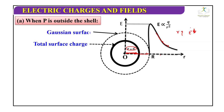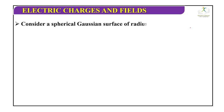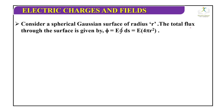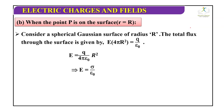For the spherical shell: consider a Gaussian surface of radius r. The total flux phi E equals E times closed integration dS equals E times 4 pi R square, which equals Q by epsilon naught. So E equals 1 by 4 pi epsilon naught times Q by R square. When point P is on the surface, R equals capital R, giving E equals Q by 4 pi epsilon naught R square, which also equals sigma by epsilon naught, where sigma equals Q by 4 pi R square.